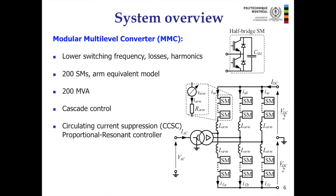This converter also uses the standard cascade control with two loops: an inner current control and an external control for power or voltage reference. Contrary to the wind farm side converter, here the current control is done in the alpha-beta frame, so it uses a proportional resonant controller. Also, for MMCs, you usually use circulating current suppression because if you just apply standard control, a second harmonic circulating current appears, so you have to take special care about it.